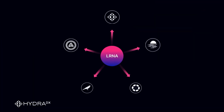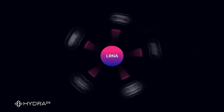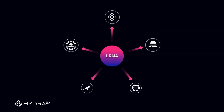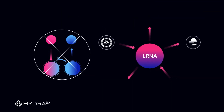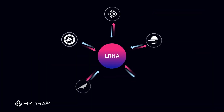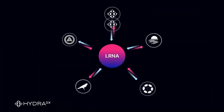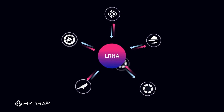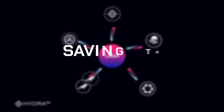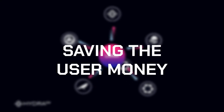Enter HydraDX. HydraDX's Omnipool AMM is the first to connect all liquidity pools for each asset in its AMM with its hub-spoke model using the hub token known as LERNER. Instead of hopping across different liquidity pools, any combination of swaps can now be done as one trade, saving the user money on fees.